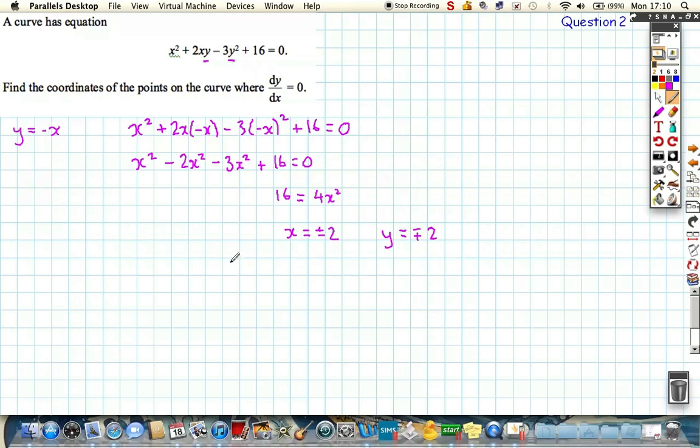So therefore the two coordinates are 2 comma minus 2, and minus 2 for x goes to plus 2 for y. And there we're finished. There are the coordinates on the curve where the gradient is 0.